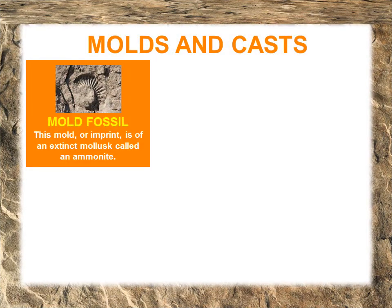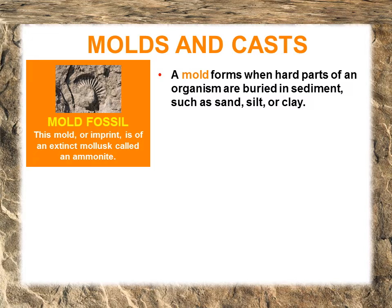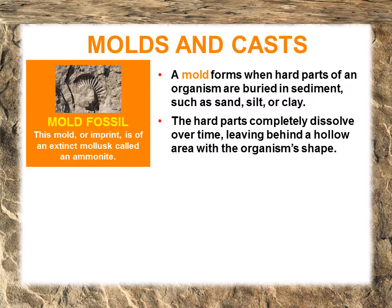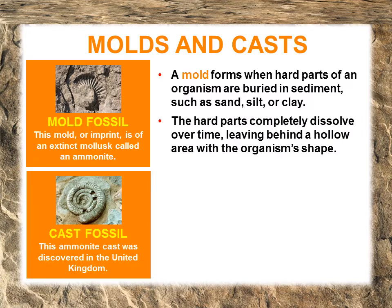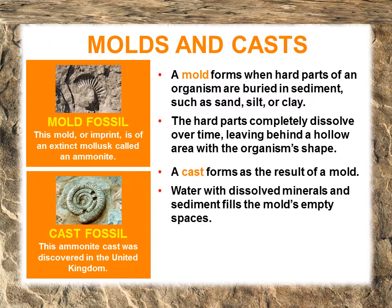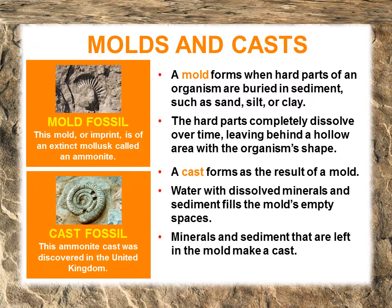Next is molds and casts. A mold forms when hard parts of an organism are buried and dissolved over time, leaving a hollow area with the organism's shape left in the rock. A cast forms as the result of a mold. Water with dissolved minerals, just like petrified fossils, seeps into the mold and leaves minerals in the space left, creating a cast of the organism.